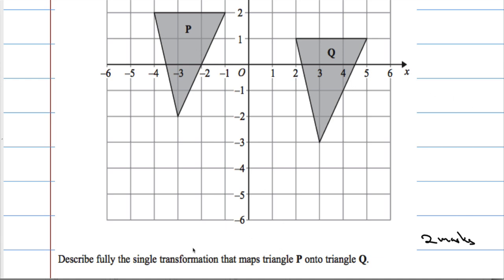So I want to describe a transformation that maps me from P onto Q. Now you could trace P if you like, and there it is there - there's triangle P traced.